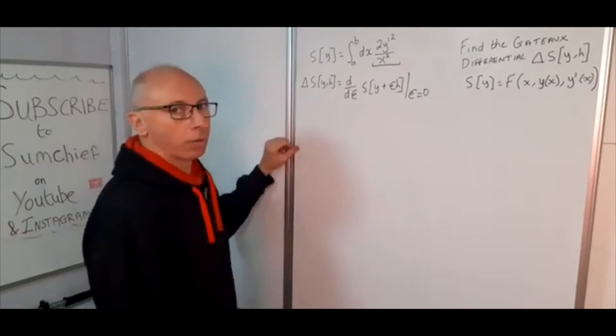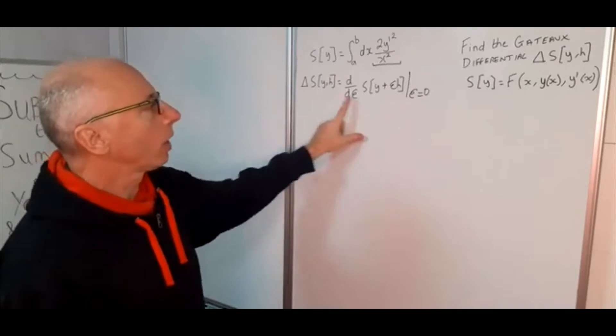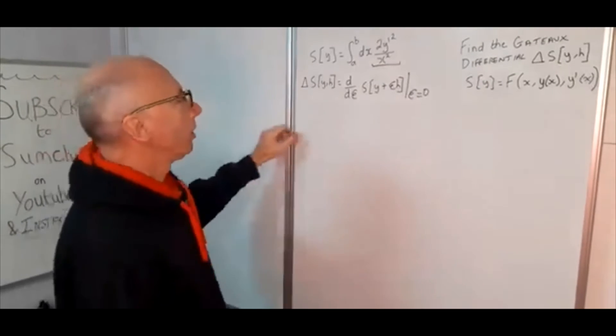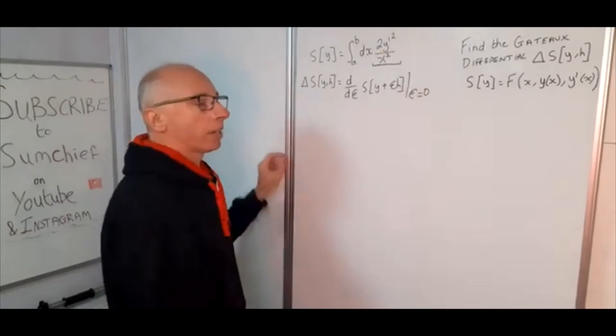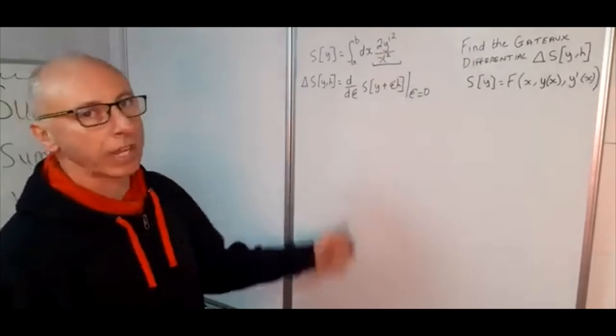So h is also a function that we are interested in and for it to be an admissible function we need this to be equal to zero and it leads on to the Euler-Lagrange equation. We will move on to that in another video.